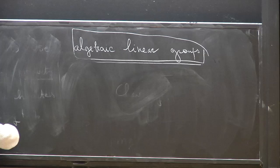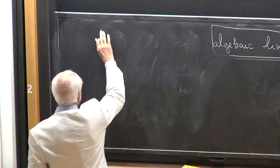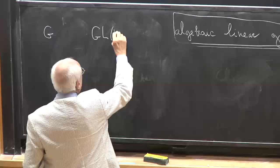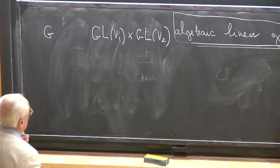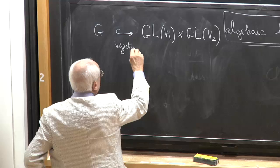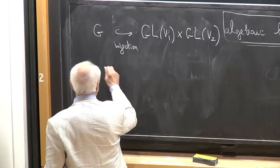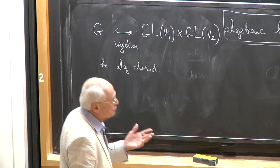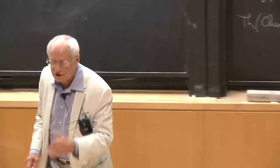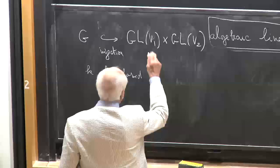The idea is rather simple at first. You start with your G and map it into GL(V1) × GL(V2). You can assume the map is injective because all that matters is the image. Also, you can assume the field K is algebraically closed — you need to show that if a representation becomes semi-simple after a separable extension, it was already semi-simple before, which is not difficult.